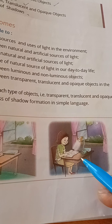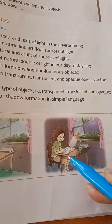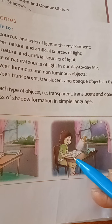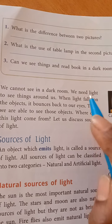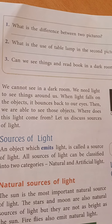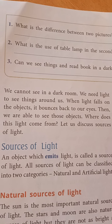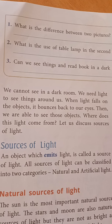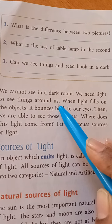The table lamp produces light and it is helpful for reading. So you can conclude that we cannot see in a dark room. If we are in a dark room, we cannot see anything. When we are in a dark room we have not seen anything. It means we need light to see things around us.